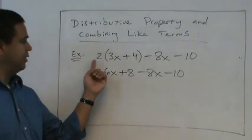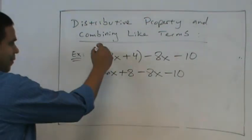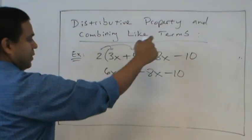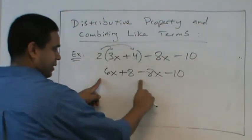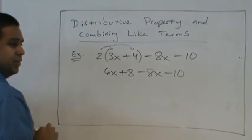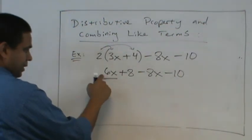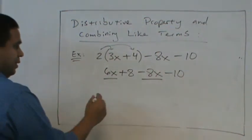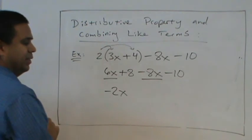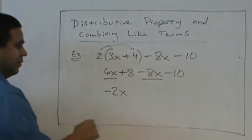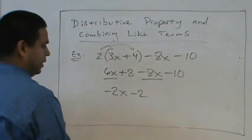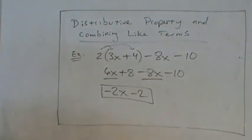So after we distribute, we combine like terms. So look here, what are the like terms? It's going to be the 6x and the minus 8x. So I can use this negative 2x. Very good. And then 8 minus 10. Negative 2. That's it. Very easy.